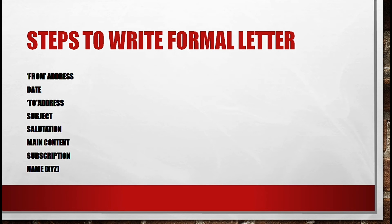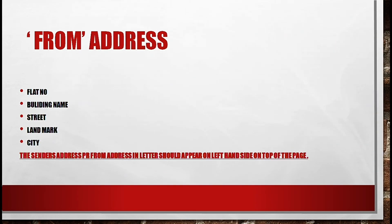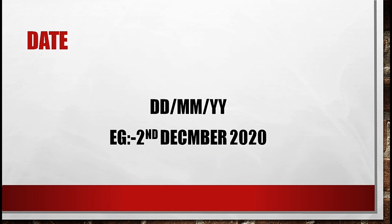Steps to write a formal letter: first, the from address; then the date; then the to address; then the subject; then the salutation; then the main content; then the subscription; and finally the name XYZ. The from address contains the flat number, building name, street, landmark, and city.